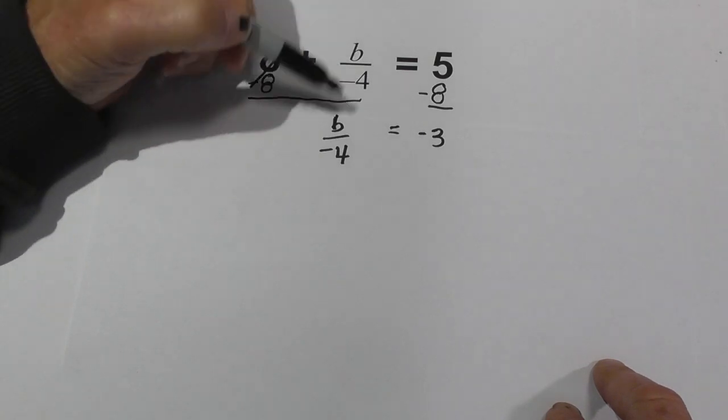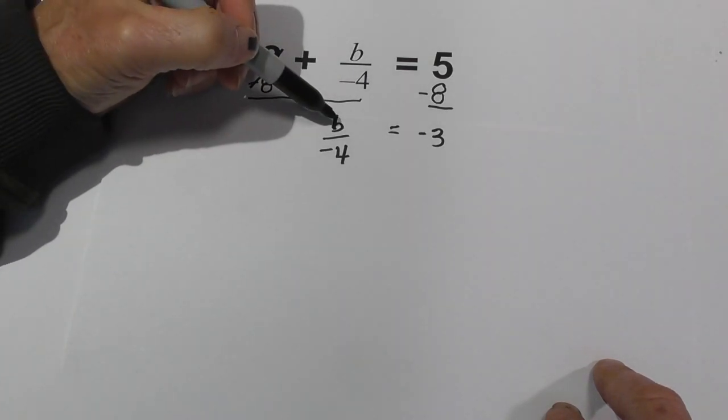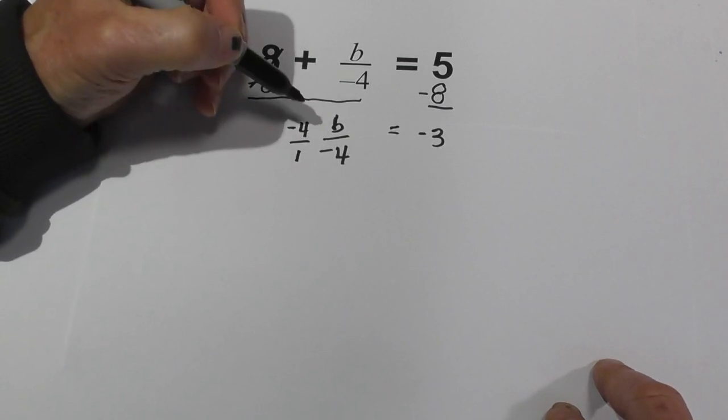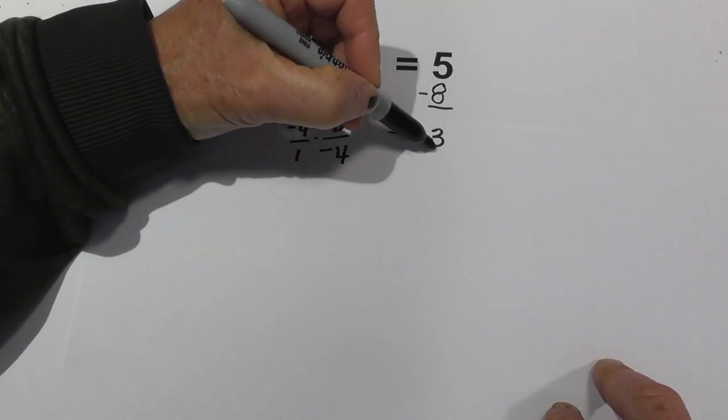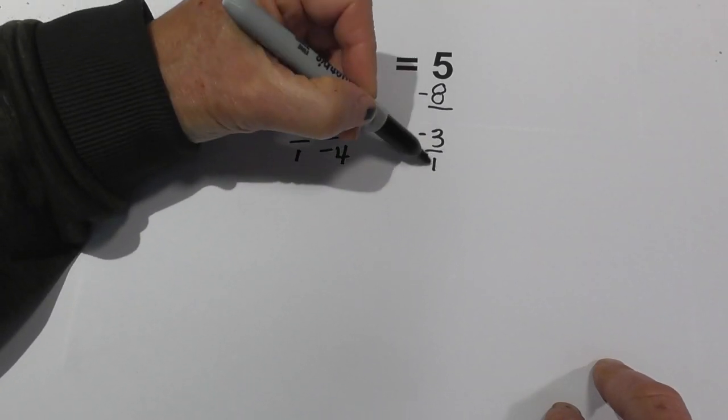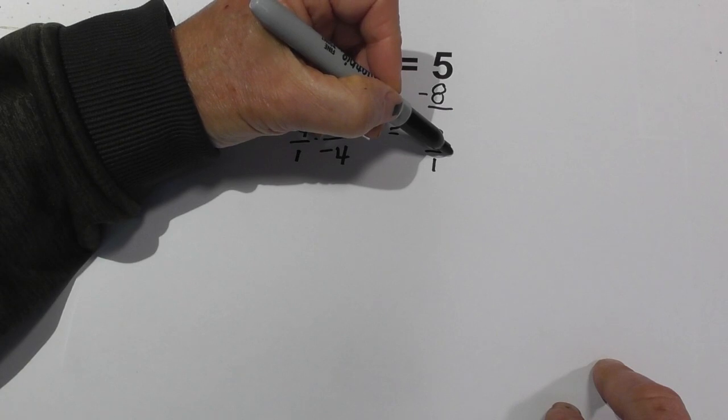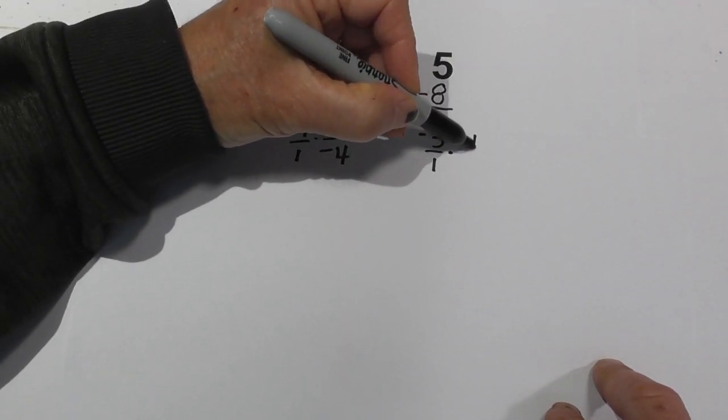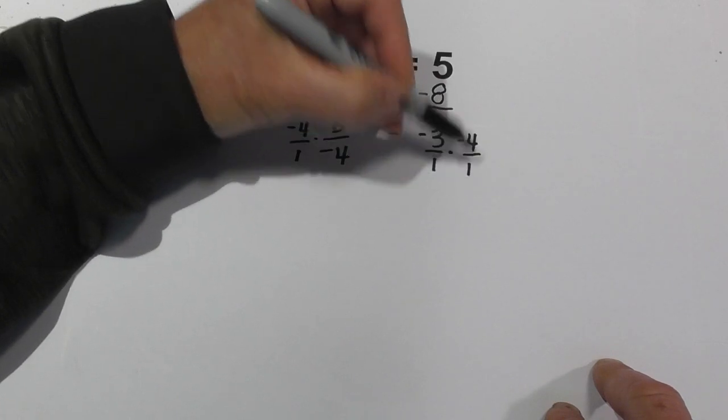Now what we need to do is deal with the fraction and we need to get the variable by itself. So we can multiply it by its reciprocal. We'll go negative 4 over 1, and I'm going to write this negative 3 over 1. It's the same thing. I'm going to multiply it by its reciprocal that we did on the other side, negative 4 over 1.